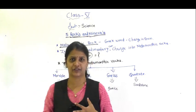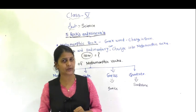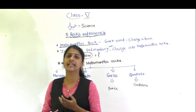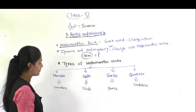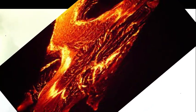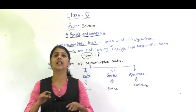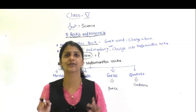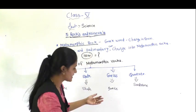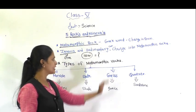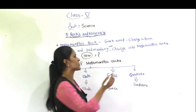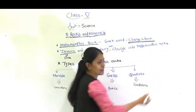So what is metamorphic? First, igneous rock — igneous means how it is formed: due to heat. Igneous is nothing but a Greek word meaning fire. And sedimentary is nothing but to settle down. Now metamorphic — in Greek, 'metamorphosis' means a change in form.